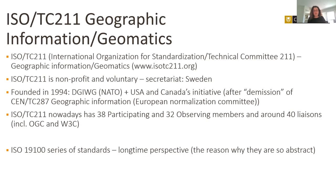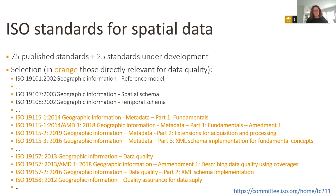The role of ISO TC 211 is to produce standards within the 19100 series. The overall philosophy is to build these standards for a long-term perspective, which is why most of them are quite abstract, offering a conceptual foundation in a specific aspect of geographic information rather than specific implementation instructions. Currently there are 75 published standards and 25 standards under development — quite a large body.